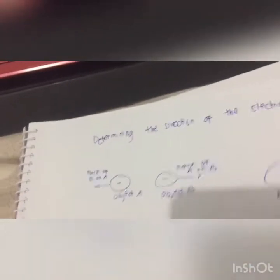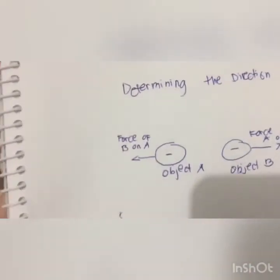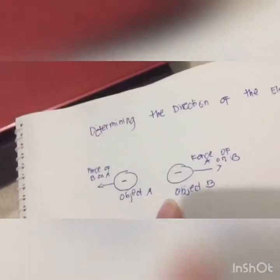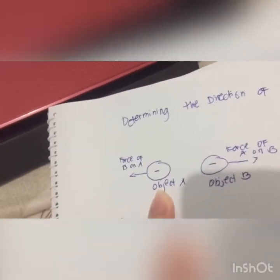The direction of the electrical force is dependent upon whether the charged objects are charged with a like charge or opposite charge, and upon the spatial orientation. By knowing the type of charge on the two objects, the direction of the force on each one of them can be determined. I wrote some notes in my notebook — we have object A and object B. The charge causes them to act upon each other, so the force on object A is directed leftward away from B, and the force on object B is directed rightward away from A.